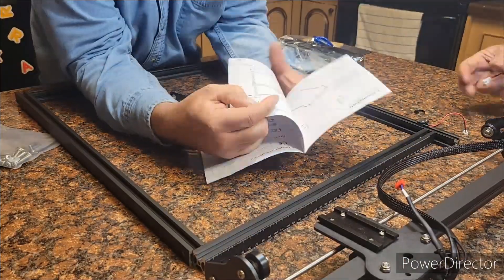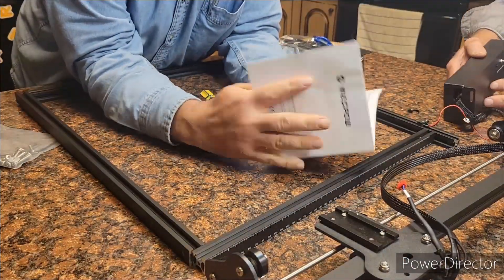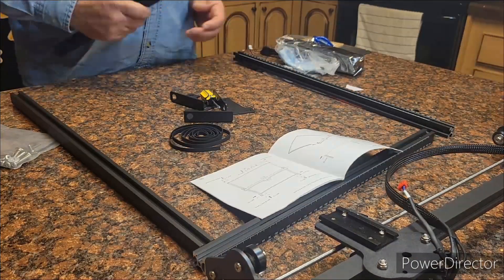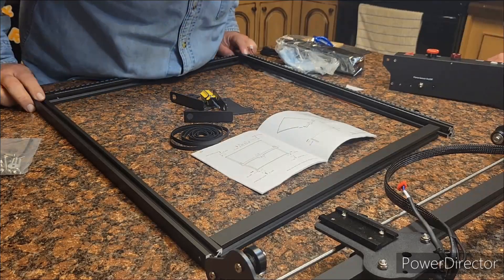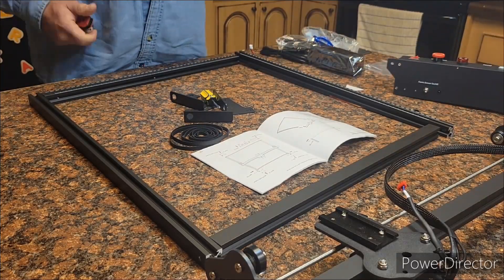So a couple of little tips when you're putting this together. The front and back are the two shorter rods. So then you want to put those in front of you and then put the longer ones on the sides. Then that way the gantry can slide onto the machine.